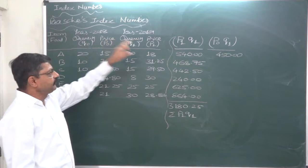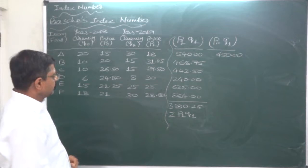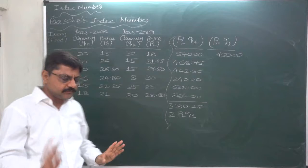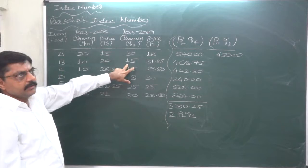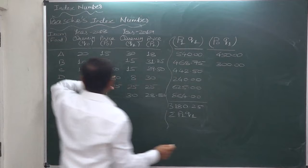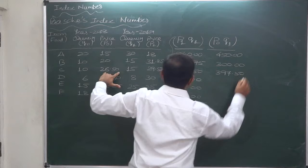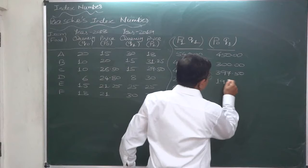That's why I use the term notional cost. Even if you can't remember this kind of column, you may calculate the index number successfully. Now P0 into Q1: 20 into 15, these two columns = 300. 26.50 into 15 = 397.5. 24.80 into 8 = 198.40.